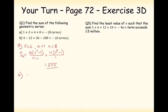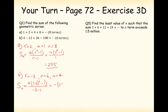For part b: r is equal to minus 3, n is equal to 6, and a is equal to 4. Applying the geometric series summation rule, we get 4 times (minus 3 to the power of 6 minus 1) over (minus 3 minus 1), which gives minus 4 on the bottom. That cancels with the 4 on top, so it's just 3 to the power of 6 minus 1, and then a minus answer, which gives minus 728.